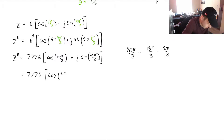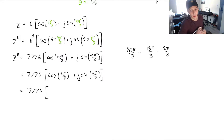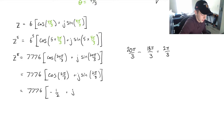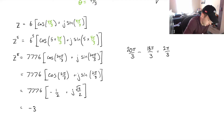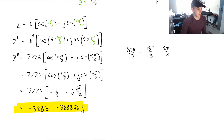We rewrite this as 7,776 times (cos(2π/3) + j sin(2π/3)). Using special triangles and the geometry: cos(π/3) is 1/2, so cos(2π/3) is negative 1/2. Sine of π/3 is root 3 over 2, and since 2π/3 is in the second quadrant, sine is positive, so j sin(2π/3) is positive root 3 over 2. Multiplying everything together gives us our final answer for z to the 5.